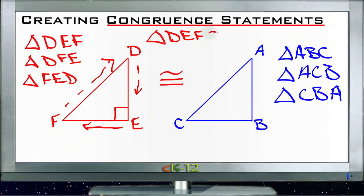So when I say DEF is congruent to the other triangle, I want to do the same thing. I want to start with that same angle, relatively speaking—the corresponding angle. So on this one, I would also say ABC.